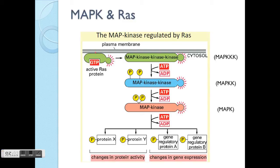RAS is a GTP-binding protein. It's different from the heterotrimeric G proteins we saw last time — this is also a G protein, but it's a monomeric G protein, meaning it stands alone by itself. After RAS activation, it will cause downstream MAPK activation.